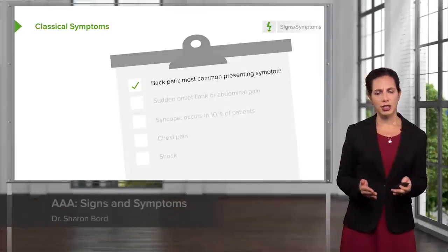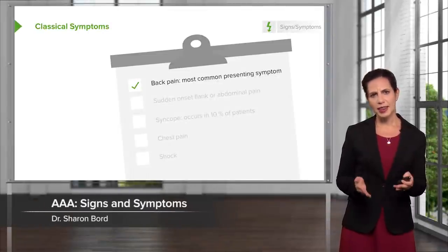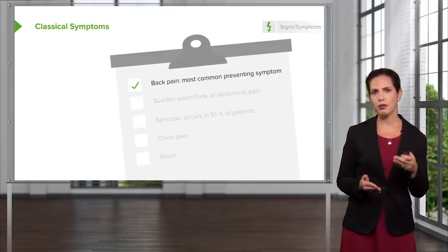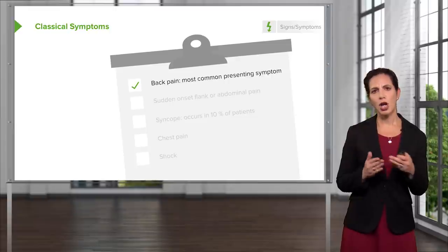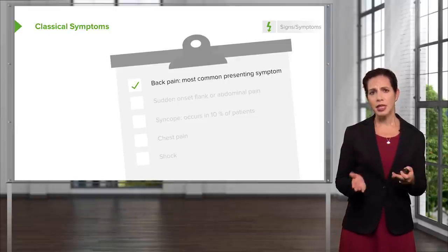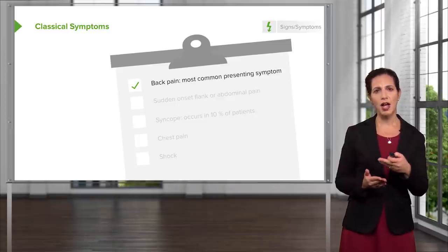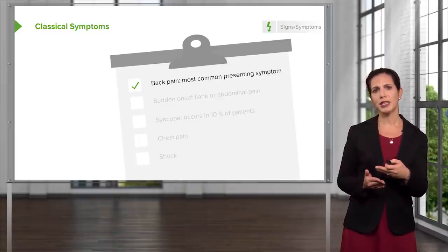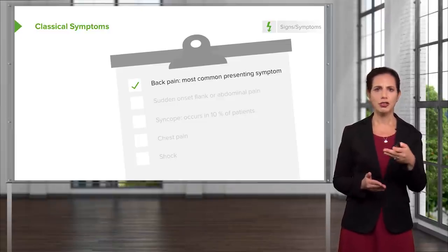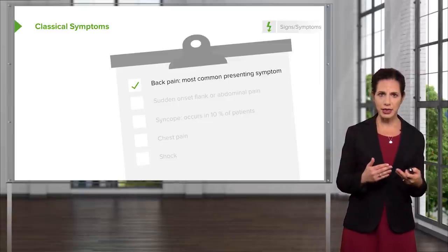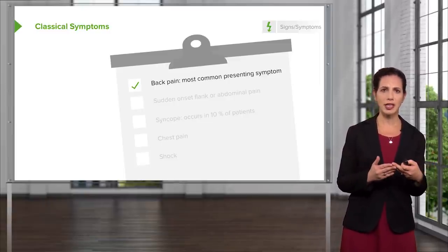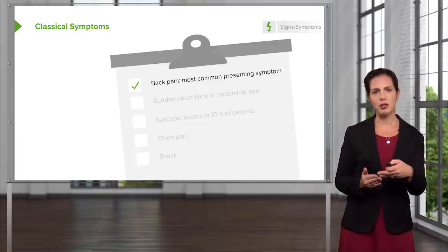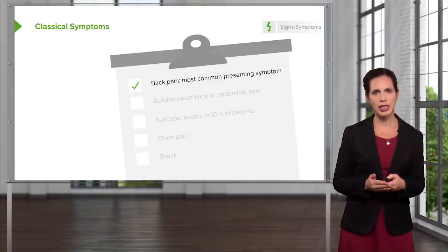Now the classic presenting history — what is the classic thing that patients presenting with AAA will walk through the door with? The most classic thing is back pain; it's the most common presenting symptom. In the emergency department, this is a real challenge because a lot of people come in for back pain. Trying to figure out who is at risk isn't as straightforward as that original patient case presentation.